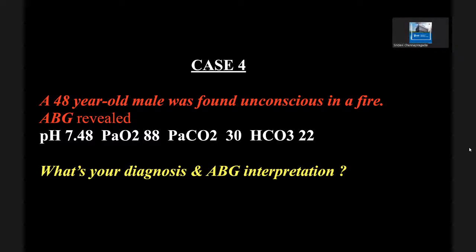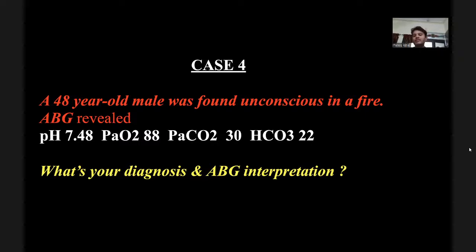If the pH was in the normal range such as 7.44, the possibility of co-existing metabolic acidosis with respiratory alkalosis would need to be considered. But the alkalotic pH definitively rules out metabolic acidosis here. The key principle is: the body never overcompensates in any disorder — whether primary respiratory acidosis, respiratory alkalosis, metabolic alkalosis or metabolic acidosis. When we calculate these formulas and expected values, the reason is to check whether the body is fully compensating or not. If it is undercompensating, another disorder is occurring. If it exceeds the target, a secondary metabolic disorder is occurring together.